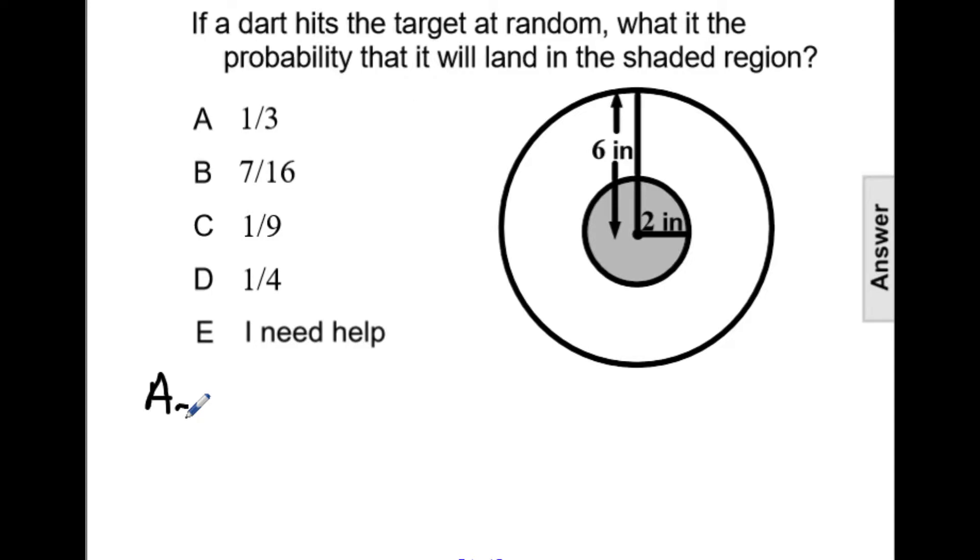First, let's find the area of the shaded region. If it's pi r squared, we need the radius of the shaded region, which we're given is 2. So pi times 2 squared will give us that the area of the shaded region is 4 pi inches squared.